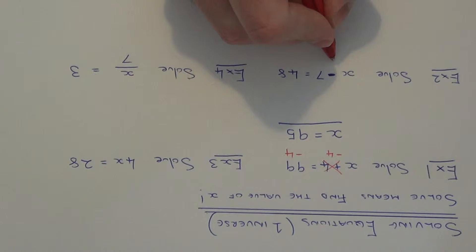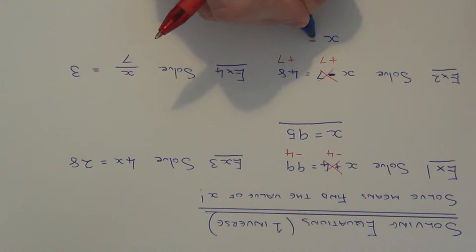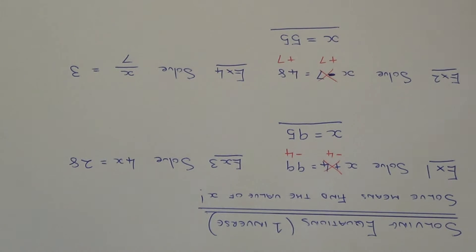So the opposite to take away 7 is plus 7. So let's add 7 to both sides. So this will get rid of our minus 7 here on the left hand side and leave us with x. 48 add 7 is 55 and that's our final answer.